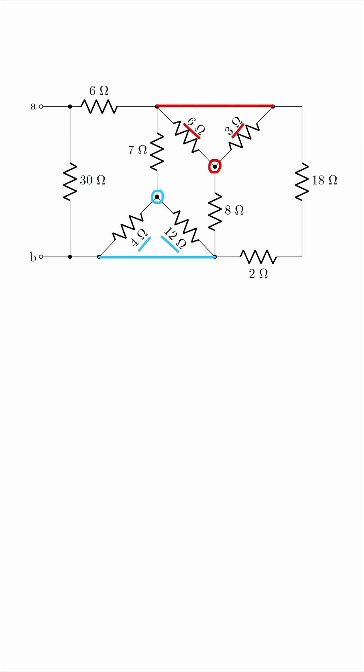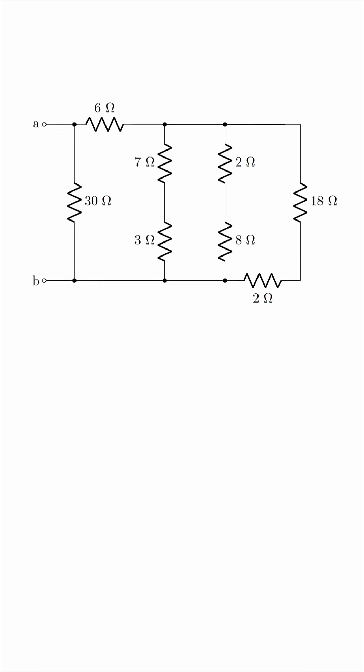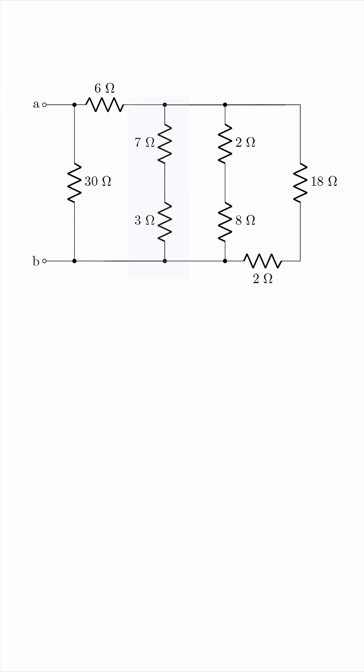4 in parallel with 12 is 3, and 6 parallel with 3 is 2. So we can simplify the circuit as follows. Now it's much simpler to deal with because these resistors are now in series: 7 and 3.